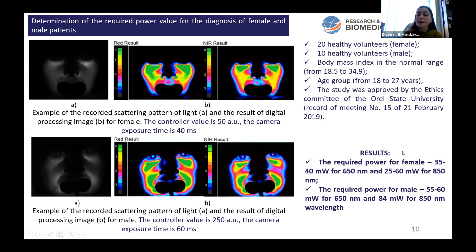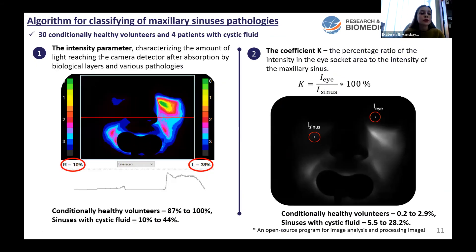On the right of this slide you can see the corresponding required optical power for male and female. The next step was to develop an algorithm for classifying different pathologies. Based on the literature analysis, we developed our algorithm. The algorithm consists of two stages: the first stage was to calculate the intensity parameter — the amount of light reaching the camera detector after absorption by different biological layers and different pathologies — and the second stage was to calculate the coefficient k by this formula.